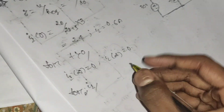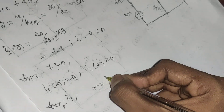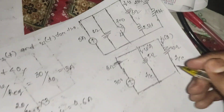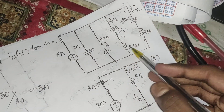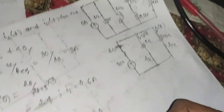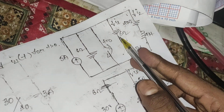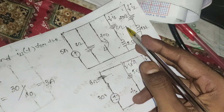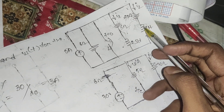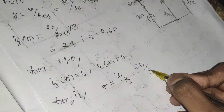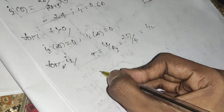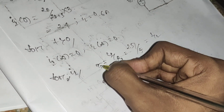For i1, calculate time constant τ1 = L1 / R1. The value of L1 is 2.5 H and R1 is 5 ohms, because the whole current goes through that resistor. So τ1 = 2.5 / 5 = 1/2 second.